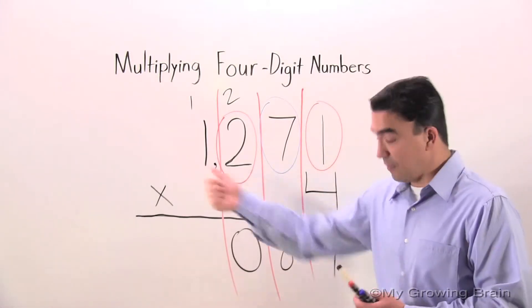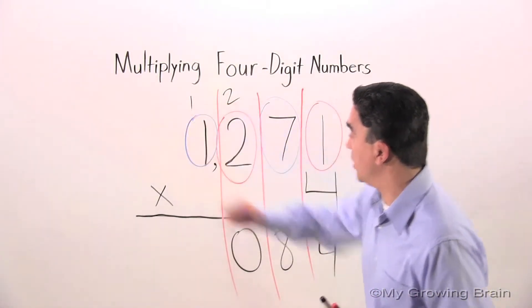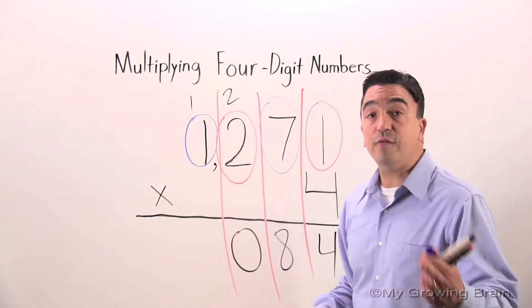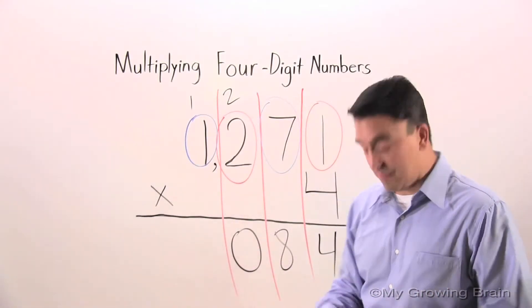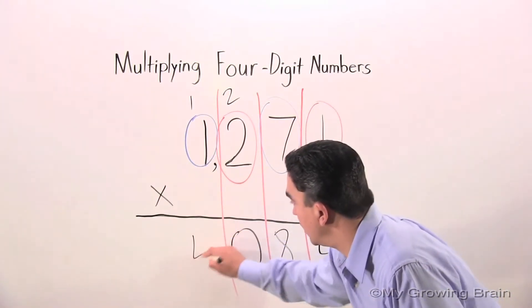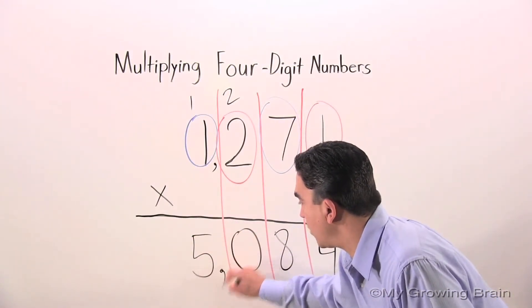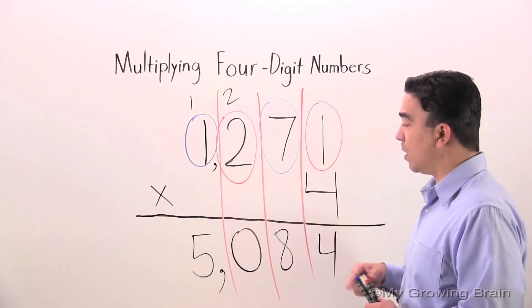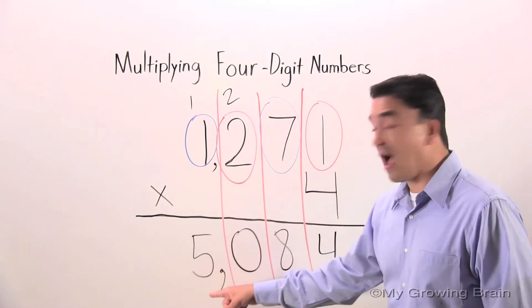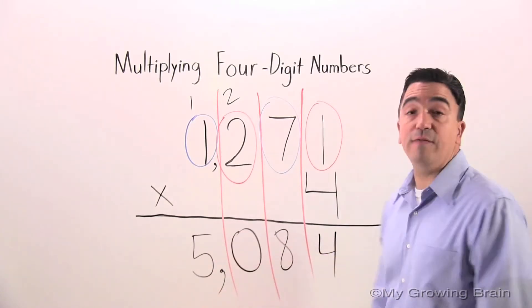Four times one, and just to remind you, I'm going to circle the one. Four times one is four. Plus one is five. So I'm going to go ahead and write that right here. Place my comma right there. 1,271 times four equals 5,084.